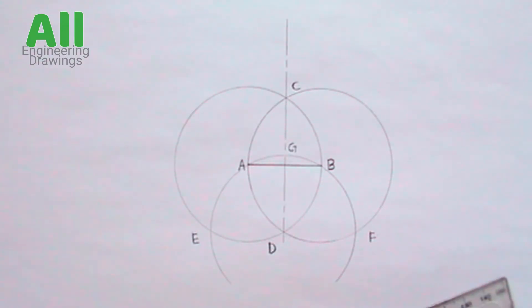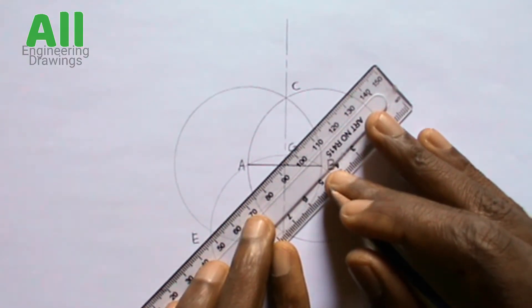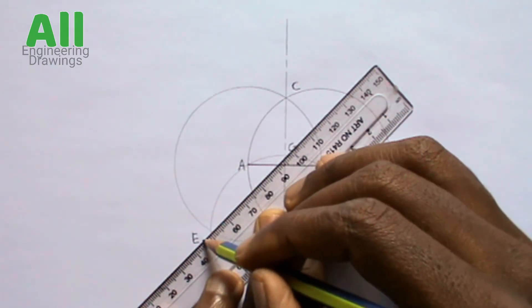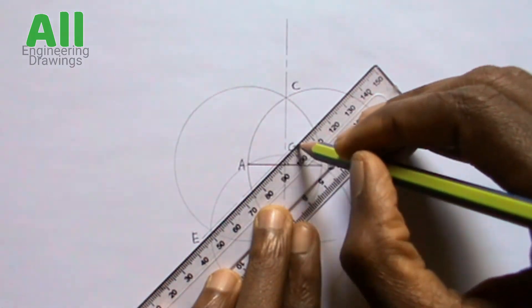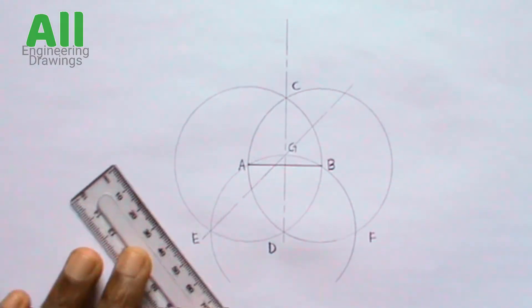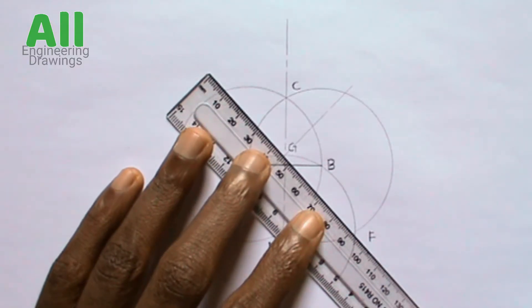Now draw a line passing through point E and point G. Also draw a line passing through point F and point G.